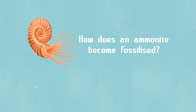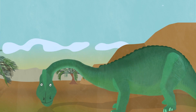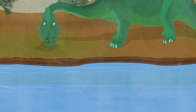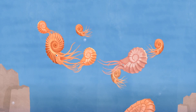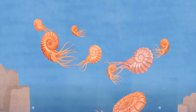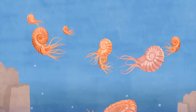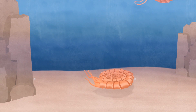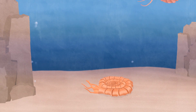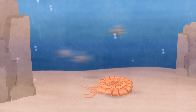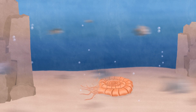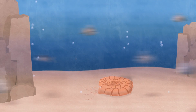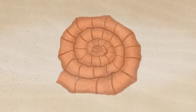How does an ammonite become fossilized? Around 150 to 200 million years ago, in the Jurassic period when dinosaurs roamed the earth, these shelled squid-like creatures were plentiful in oceans. For some reason this particular ammonite died, its shell ended up on the seabed, and the soft squishy parts were either eaten or broke down over time.